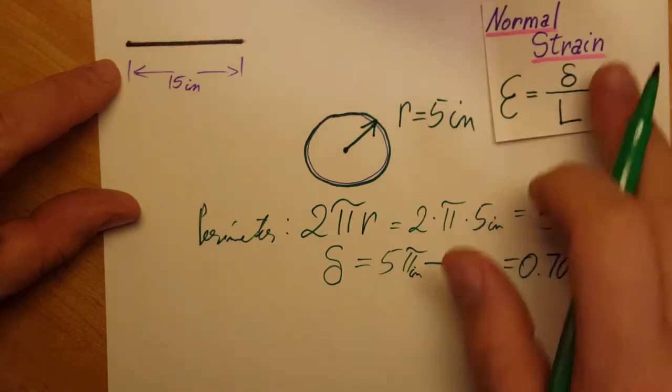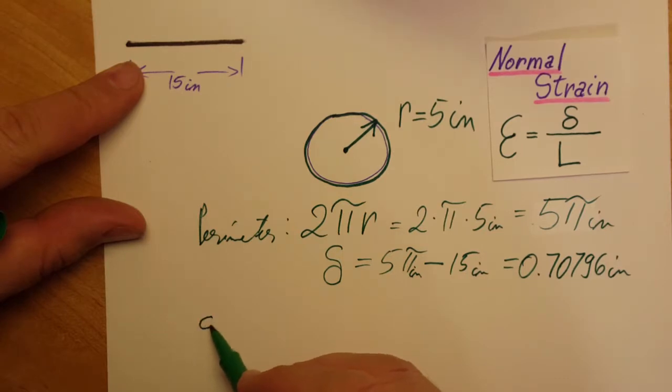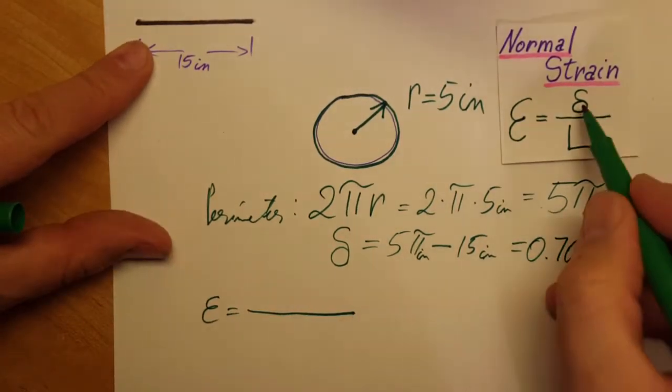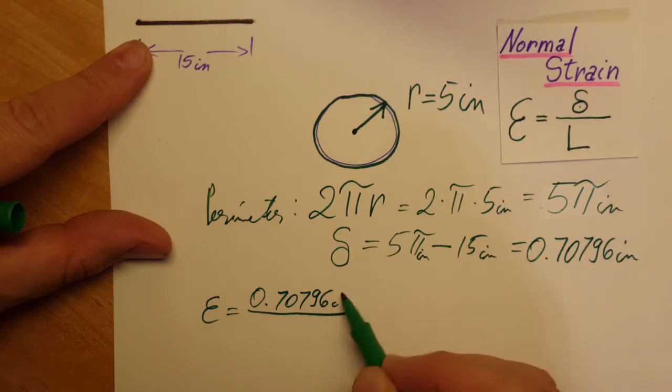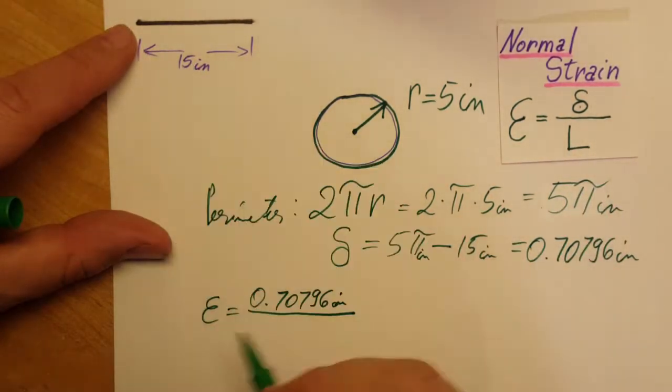Now we arrive at our normal strain formula. We can go ahead and plug in: E equals our delta, 0.70796 inches, divided by our original length, 15 inches.